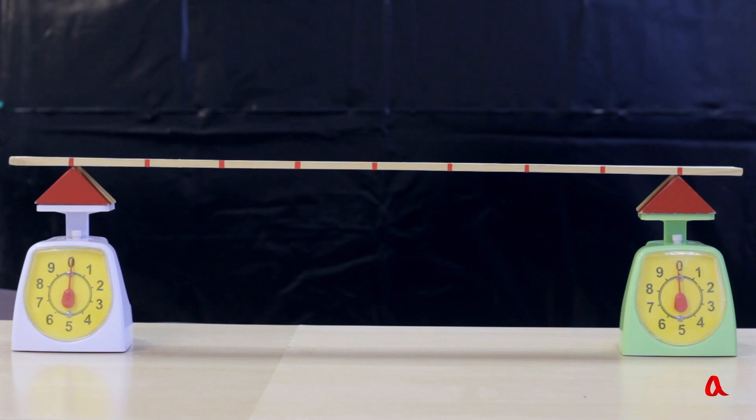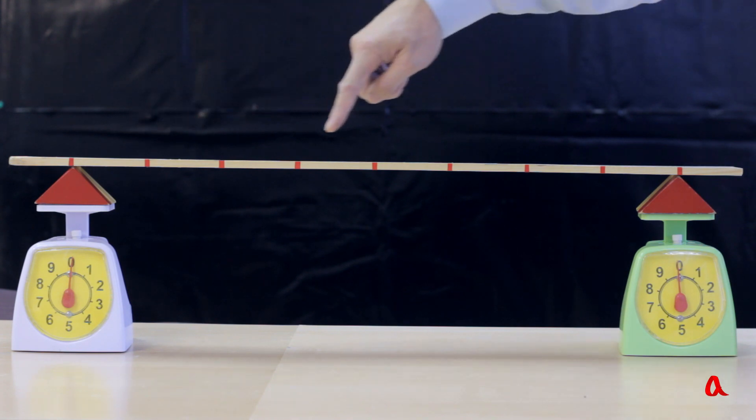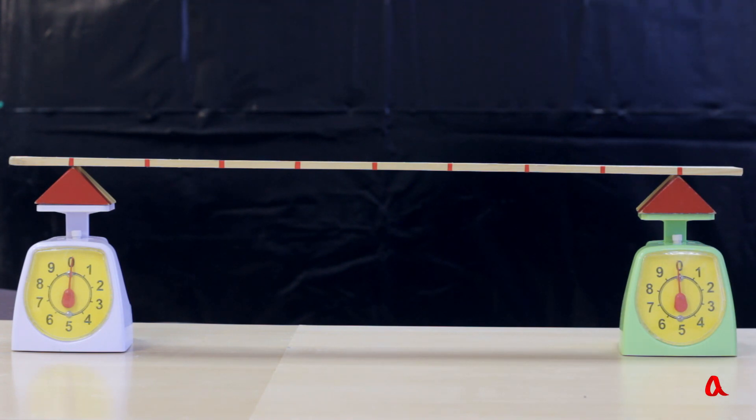Let's see how the loading is distributed between the two people carrying a load on a long stick. We replace the people with scales, divide the distance between the supporting points into 8 equal parts and get an 8-unit load.